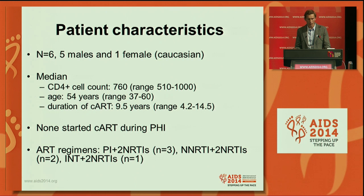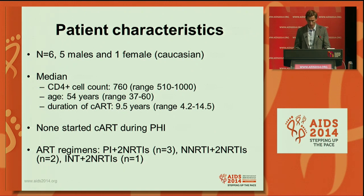Here are some brief basic patient characteristics. We included five males and one female, all Caucasians. The median CD4 T cell count at inclusion was 760, and the median age was 54. The median duration of antiretroviral treatment was nine and a half years. None of these patients had started antiretroviral treatment during acute HIV infection, and we had no restrictions regarding what antiretroviral regimens the patients could be on.